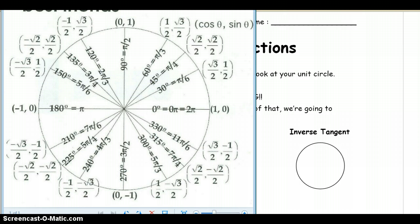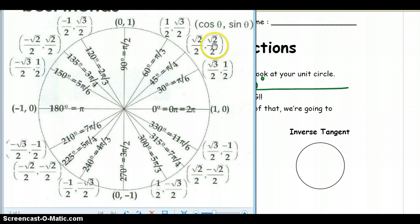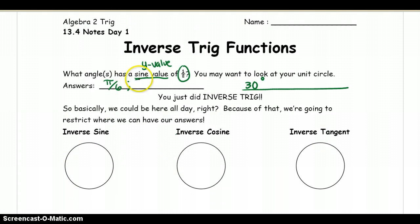Here's my quick unit circle. That's zero, that's a half — so pi over six would be one of our answers. That's an angle where that's happening. So pi over six, and in degrees that is 30 degrees. Looking around the circle, here's another one: 5π over 6, or 150 degrees, will also be another answer.